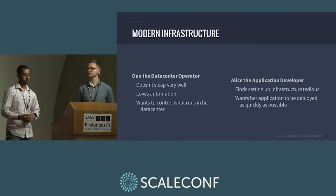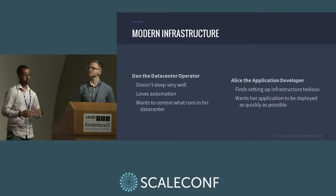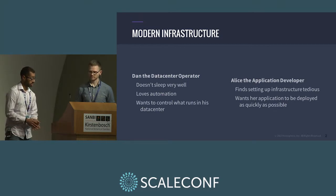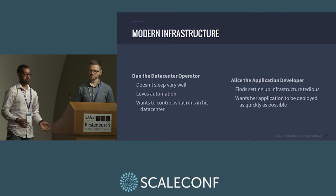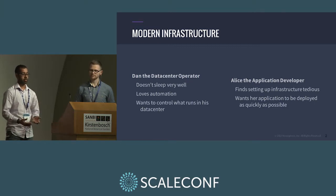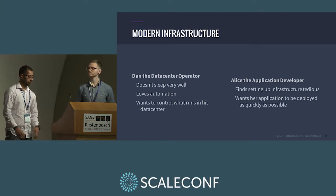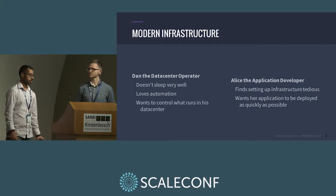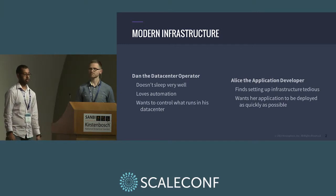Dan really wants to control what's running in his data center — a very high or very low level understanding of everything running there. Alice, on the other hand, just wants to deploy her application. She doesn't really care about the process of getting things to production. It's a necessity of developing an application, but really she just wants her application running on infrastructure as quickly as possible. She also doesn't like getting woken up, and in many organizations now, Alice is often on call too.